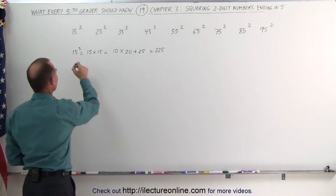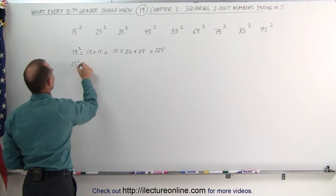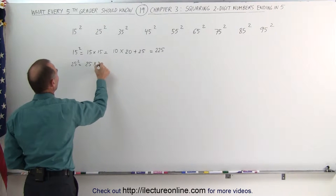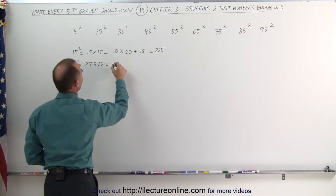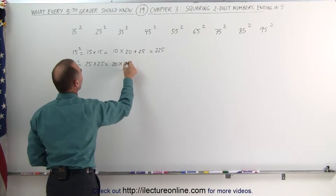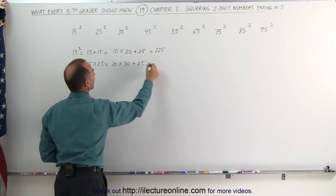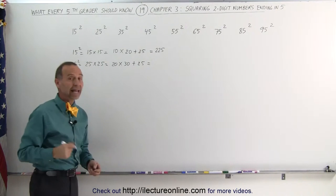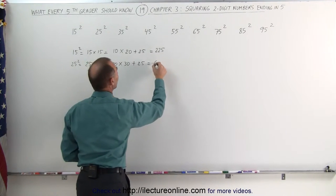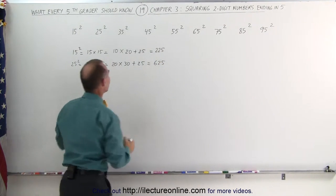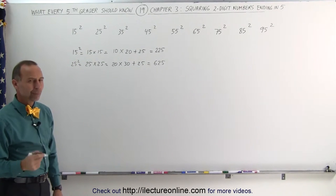We use the same technique for 25 squared. 25 squared is equal to 25 times 25, which is the same as multiplying 20 times 30. Again, I subtracted 5 and added 5, and then I add 25 to that. 20 times 30 is 600, add 25 gives you 625, which is 25 squared. Pretty neat, isn't it?